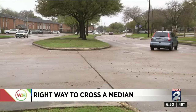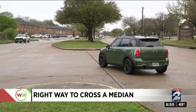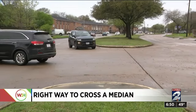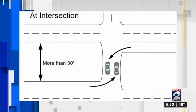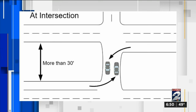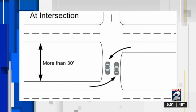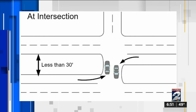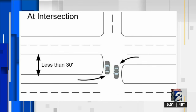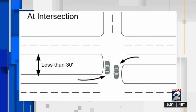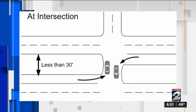The confusion comes when the crossover is not striped — people aren't sure which side they should use. The answer is: it depends. If the crossover is at an intersection and the median is more than 30 feet wide, each end of the crossover is a different intersection, and vehicles would use the right side of the crossover, as seen in this diagram. If the median is less than 30 feet wide, both ends are part of the same intersection, and vehicles would drive on the left side of the crossover — for example, turning left before reaching the center of the intersection as required.